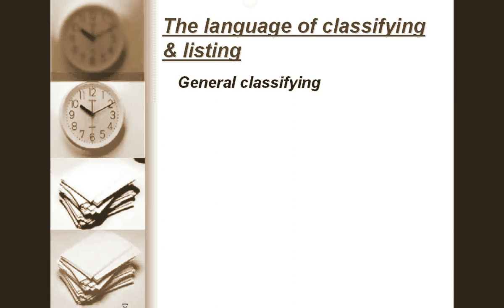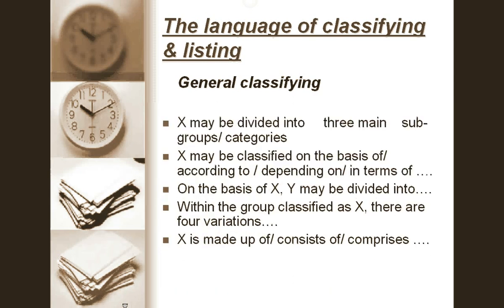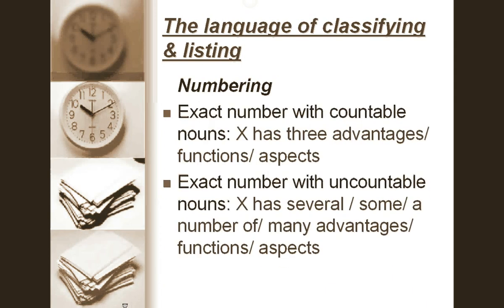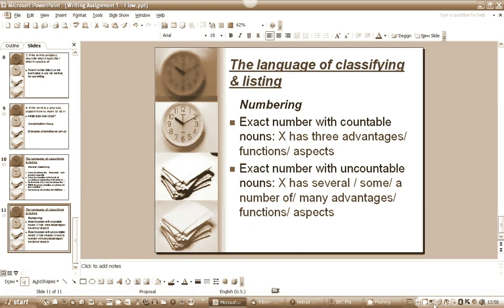How do we classify? Here's some useful language you can use. Not all of these are particularly relevant for the flow example, but some of them we can use, and we'll try to use these again in the future when defining things. Sometimes you'll need to look at numbers — for example, with countable nouns: X has three advantages, three aspects, three functions. With uncountable nouns: it has some, a number of, many advantages. In flow, it's just the one idea. I hope that's given you some ideas. We're going to have a tutorial this week to talk about it in more detail.